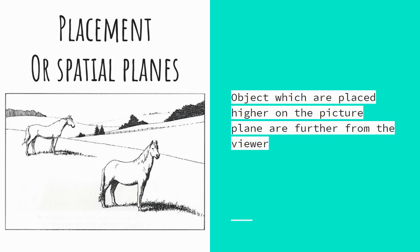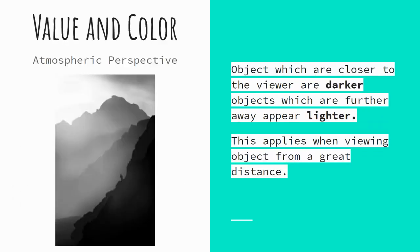Placement, or spatial planes — this is probably one of the trickier ones. The idea is that objects closer to us, the viewer, are closer to the bottom of the page. So which horse is closest to us — the one on the left or the one on the right? The one on the right is correct. Value and color refers more to landscapes; objects closer to us are darker, while objects further away are lighter due to the atmosphere — hence atmospheric perspective.